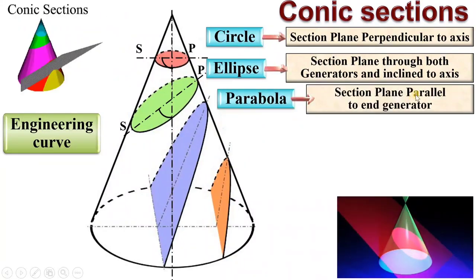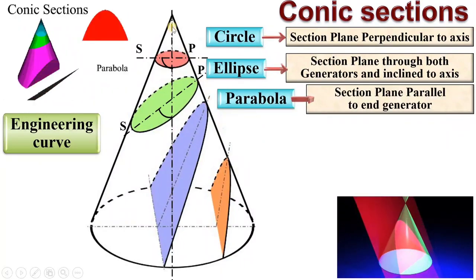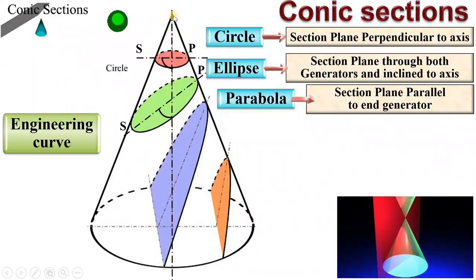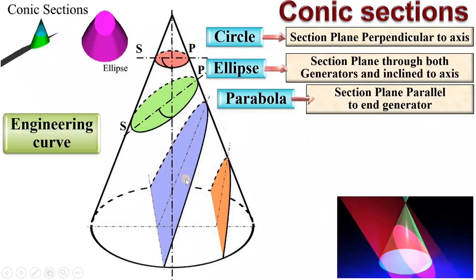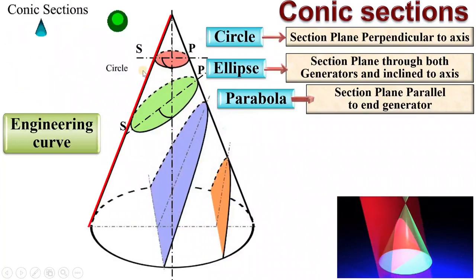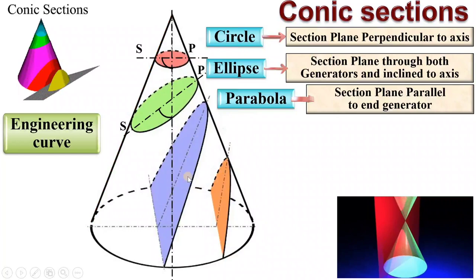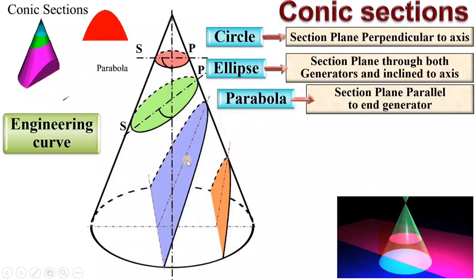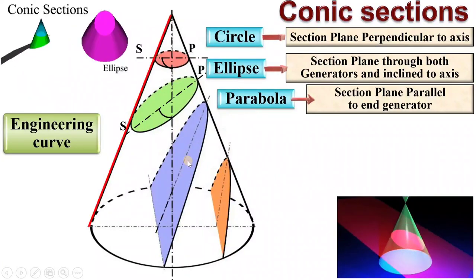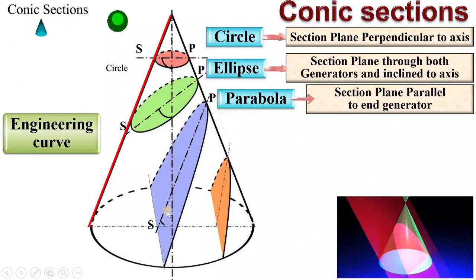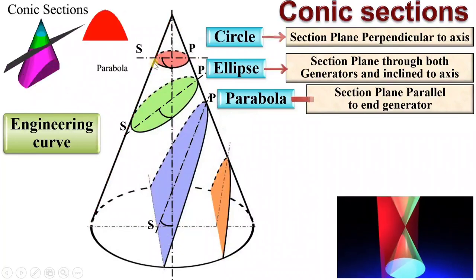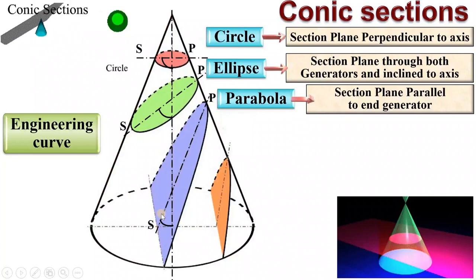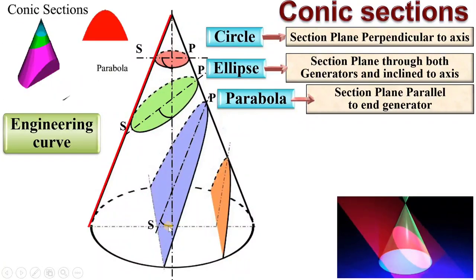Next, parabola — the section plane is parallel to the end generator. There are two end generators, and your cutting plane is parallel to one of them. This cutting plane is inclined to the axis of the cone but is parallel to one of the end generators, which gives you the parabola.